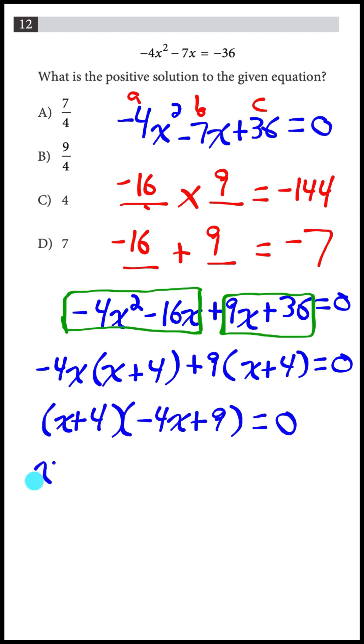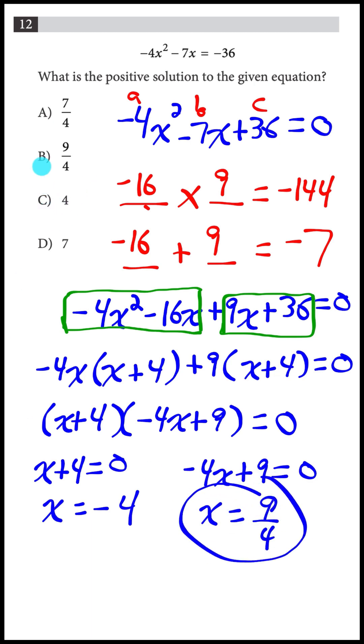I get two answers to this equation. X plus 4 is zero if x is negative 4, and negative 4x plus 9 is equal to zero if x is equal to 9 over 4. So the only positive answer to this equation is 9 over 4.